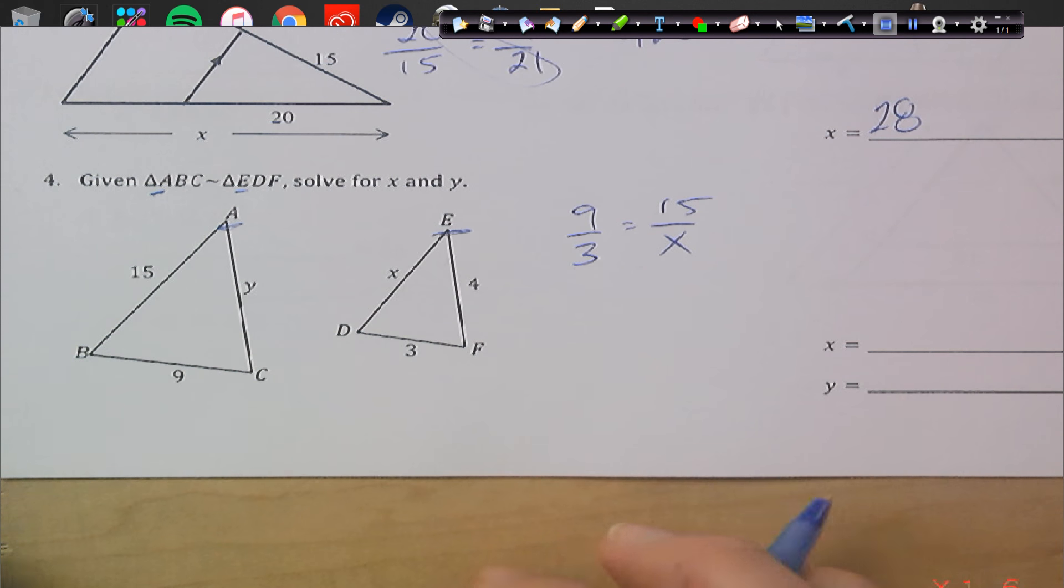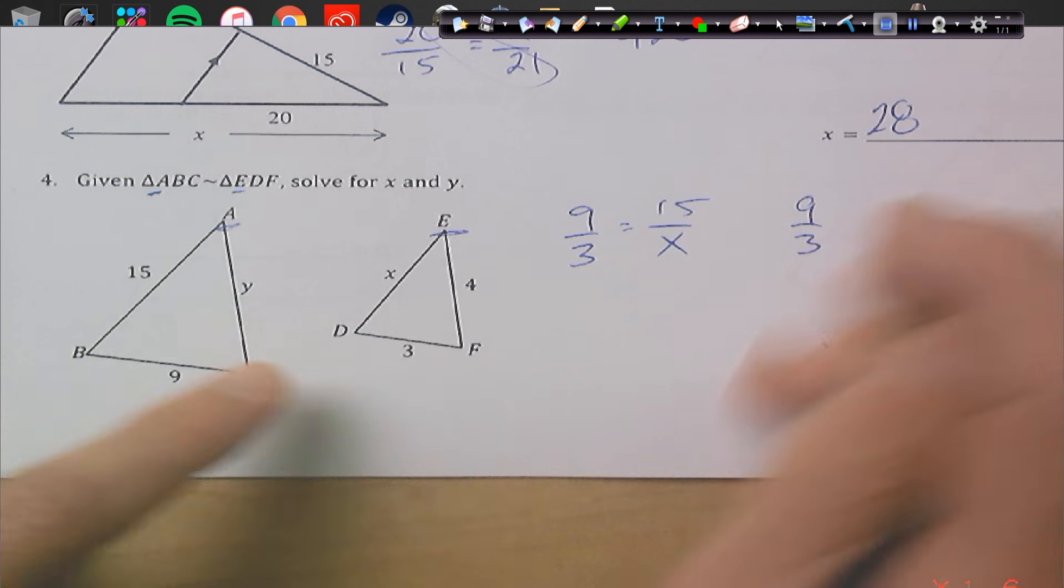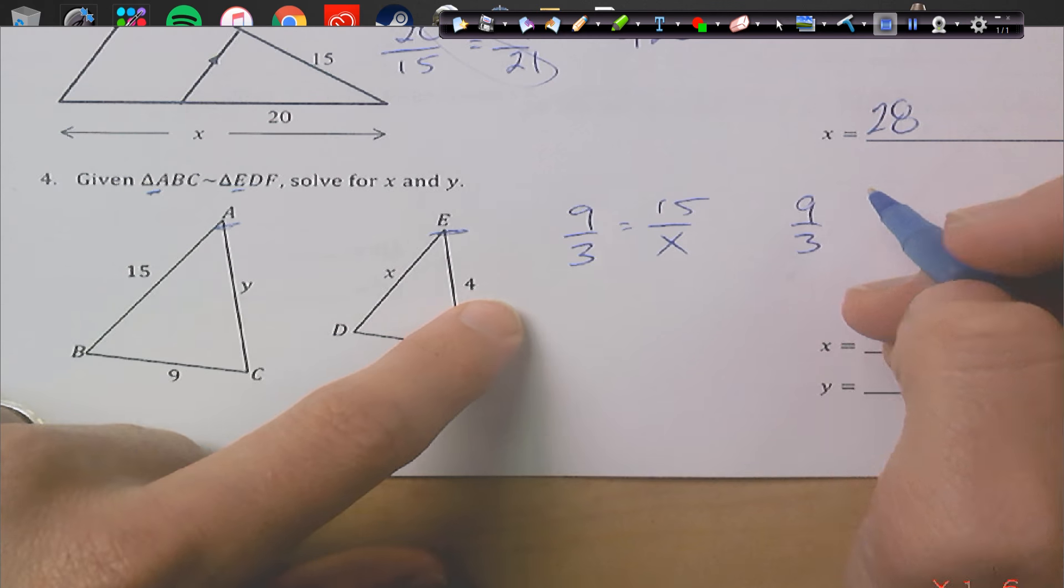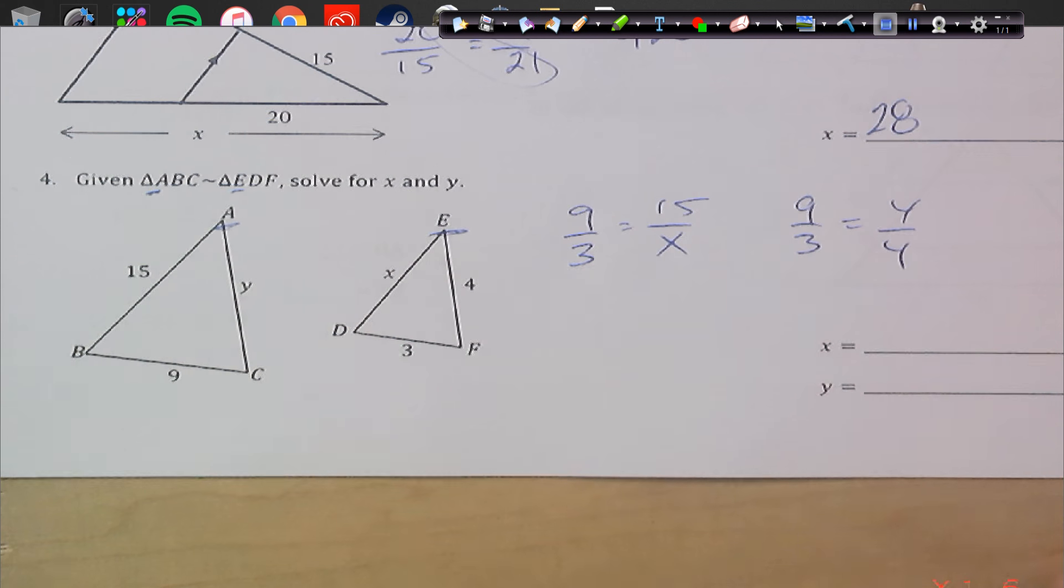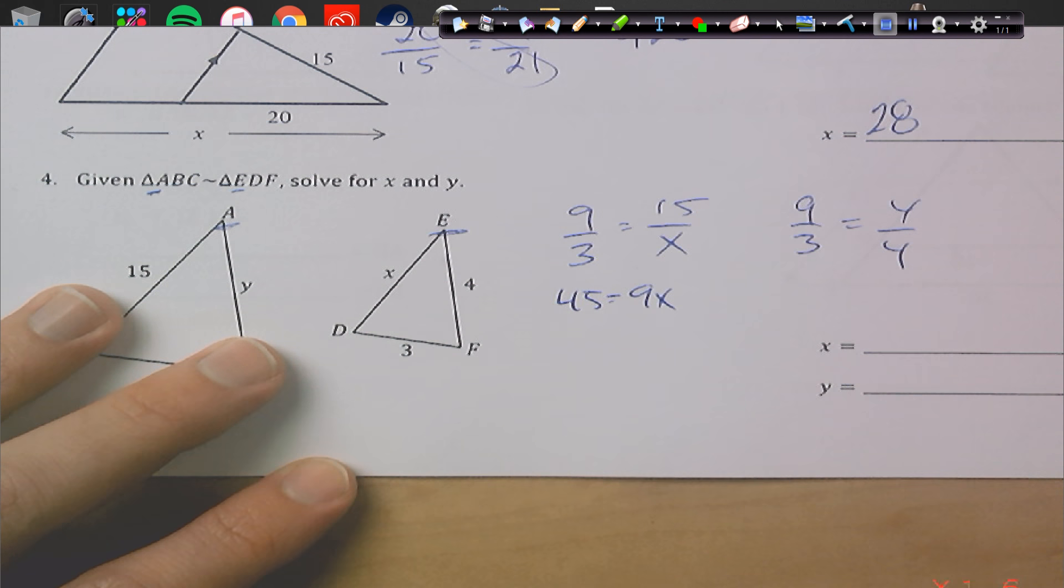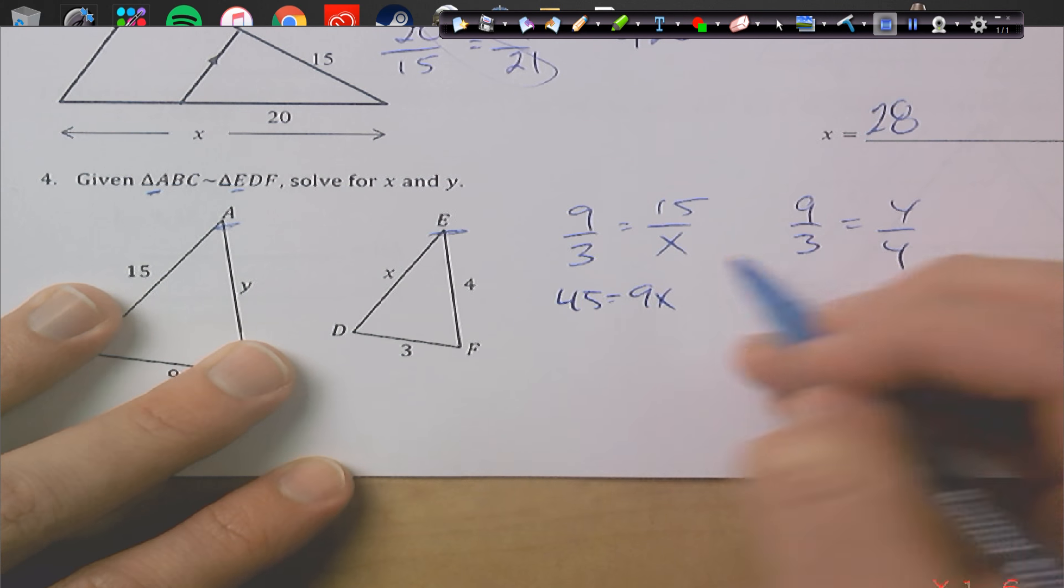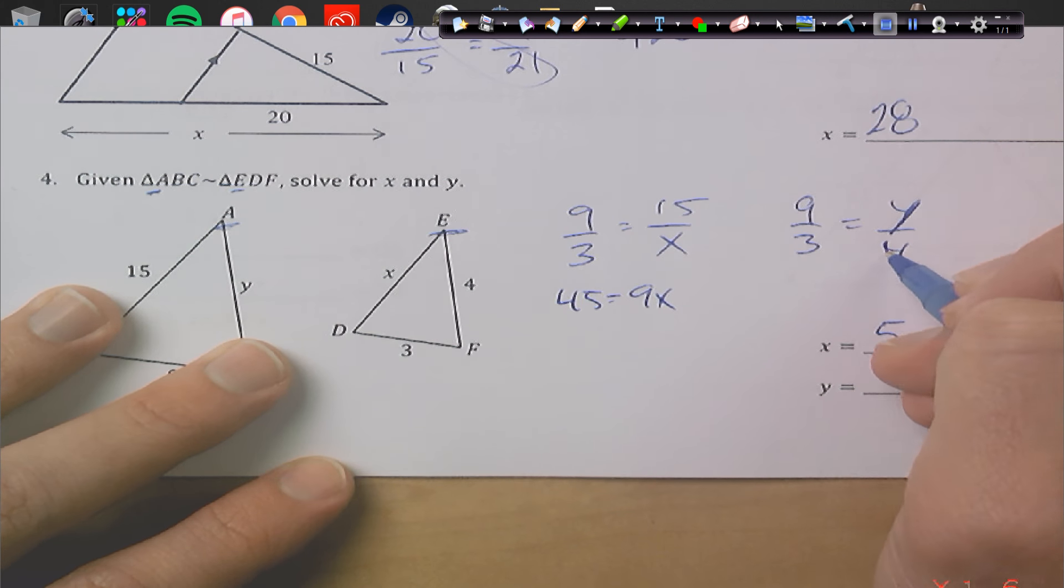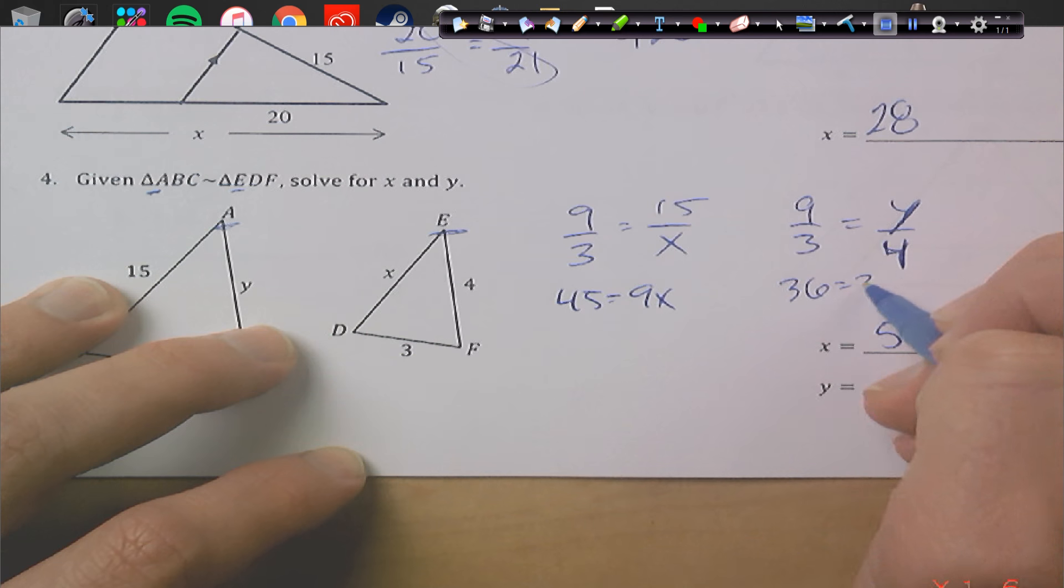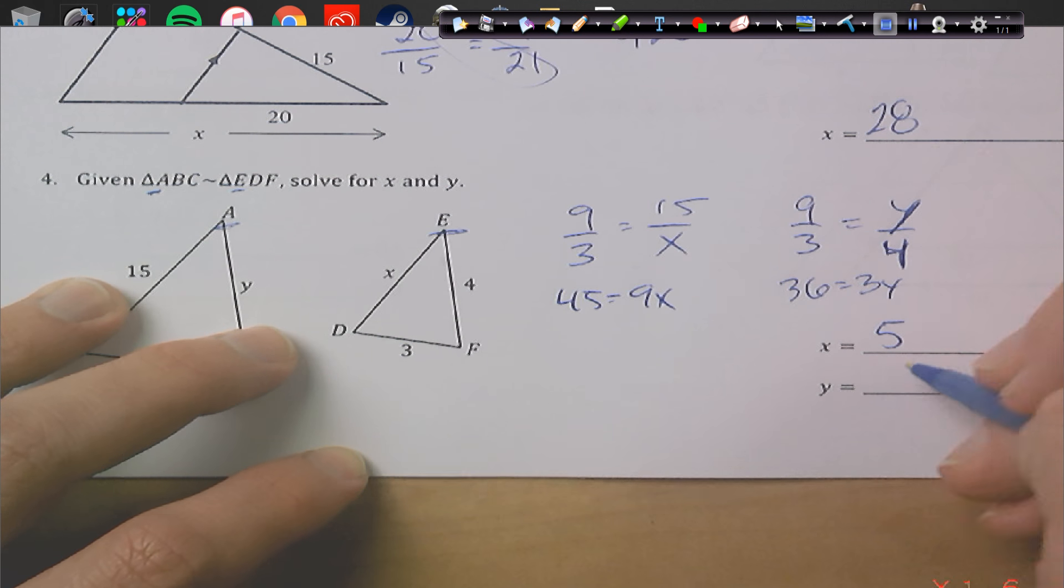So that's one we can set up, and then we want to use the 9 over 3 again, and this time we're going to use the y. So I went 9 to 3, so I need to go y to 4. Alright, so we have two cross products to set up here. So 3 times 15 is 45 equals 9x. So that's going to give us x equals 5. Over here, we're going to get, and this is kind of confusing, this is a y, and that's a 4. We have to be confused with one another. So 9 times 4 is 36 equals 3y. And that is going to give us 12.